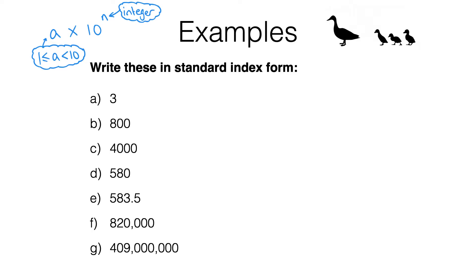Let's just remind ourselves that 10 to the power of 0 is 1, 10 to the power of 1 is 10, 10 to the power of 2 is 100, and 10 to the power of 3 is 1000 and so on. What's important here is that because of the way we restrict what a can be, when we've got a number in standard form, the power of 10 — in particular the value of the index, the value of n — tells you something about the size of the number.